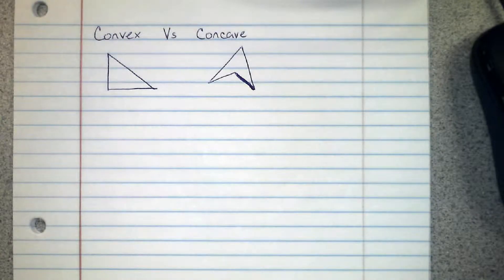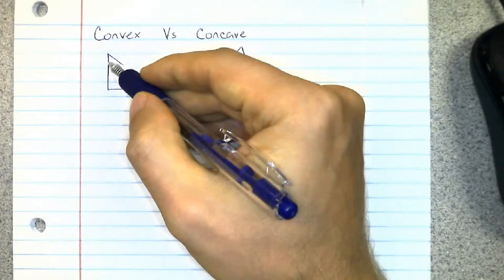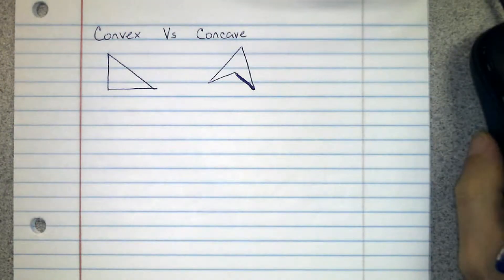Next we're going to talk about whether a polygon is convex or concave. The easiest way to explain this is to show you. Here I have two polygons. If I take the segments that make the sides and extend them to make lines, take a look at what happens.